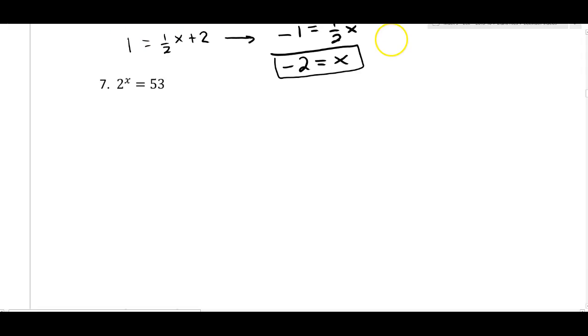For the next problem, two to the x is 53. This is a straightforward log problem. Log base two of 53 equals x. This would be a good place to stop and just make sure that you know how to put logs in your calculator. That's the only thing that you can do with this here is put it in your calculator, since 53 is not an even power two.